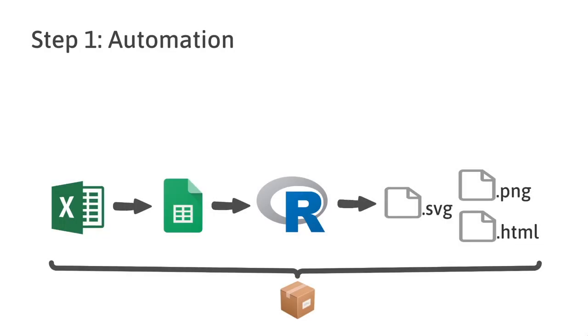This entire process is wrapped up within an R package with several helper functions to help automate this pipeline. When we get to integrating with the publishing house's processes, this will likely become an API. So we ticked the box of figuring out how to automate this pipeline so that the graphs can be easily updated.